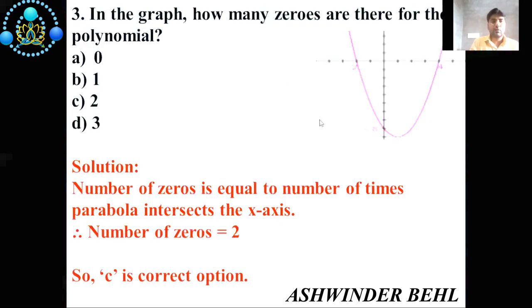Third question: In the graph, how many zeros are there for the polynomial? (a) 0, (b) 1, (c) 2, (d) 3. So now we will solve this question. Number of zeros is equal to the number of times parabola intersects the x-axis. Therefore, number of zeros is equal to two. See here one and that is two. So c is the correct option.